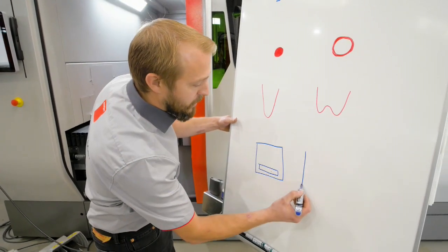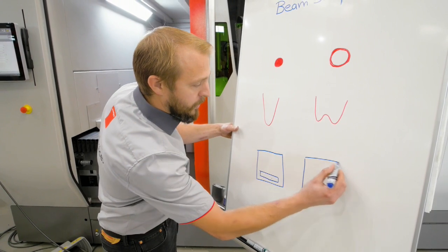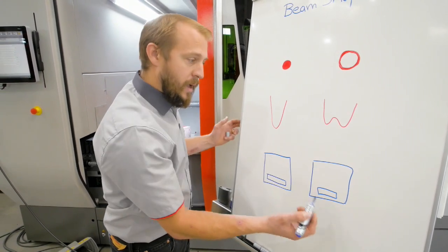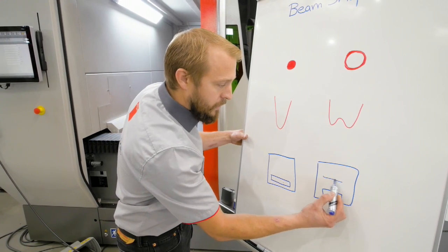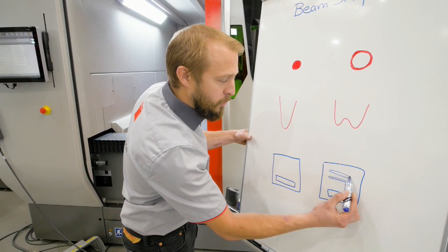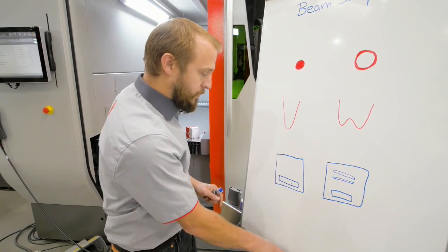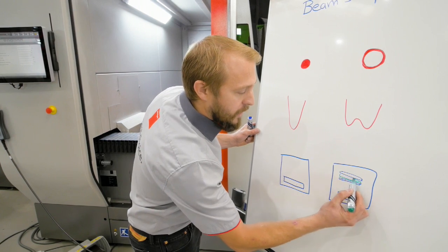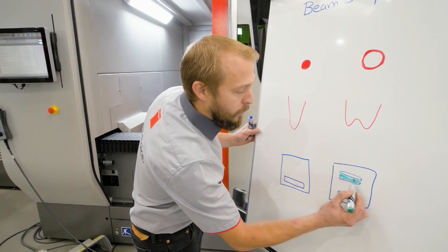With beam shaper, we have in the similar cartridge a protective glass, and then a second small protective glass and a third small protective glass. And finally, between those two protective glasses, our beam shaper.